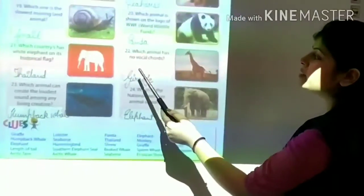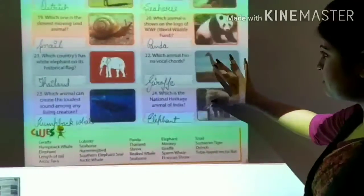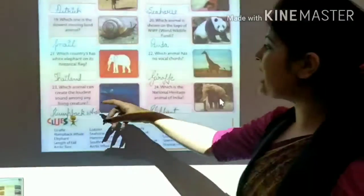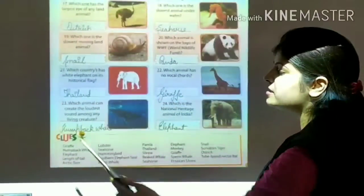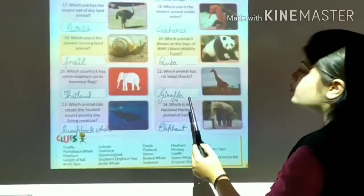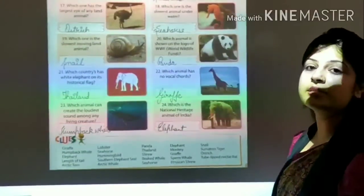Which animal has no vocal cords? It's giraffe. Which animal can create the loudest sound among any living creature? It's humpback whale. Which is the national heritage animal of India? It's elephant.